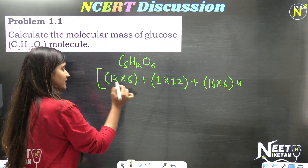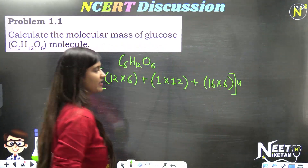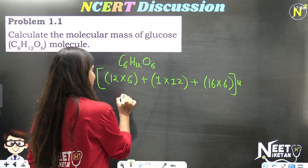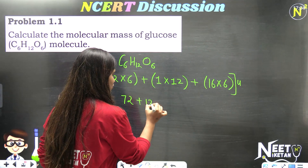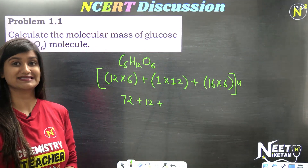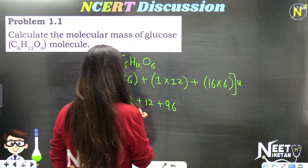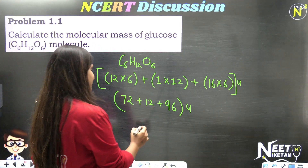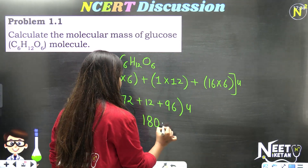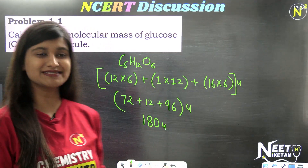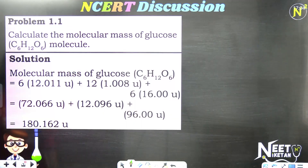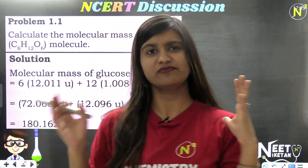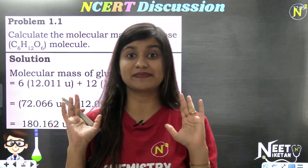We are calculating unified mass. The molecular mass: 12 × 6 is 72, plus 12 (for H), plus 16 × 6 is 96. So it comes out to be 180 u. Very simple, very easy, kuch difficult nahi tha. As you can see in the NCERT, I have tried to solve it exactly the same way.